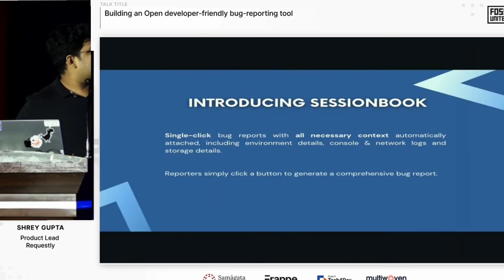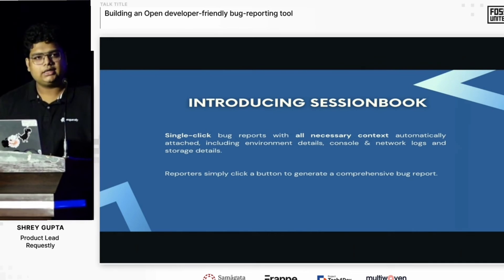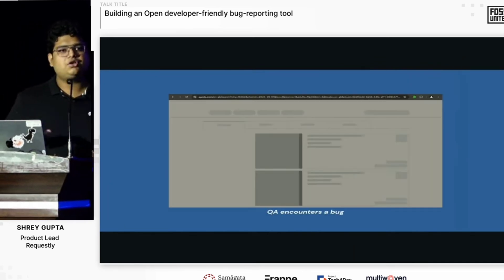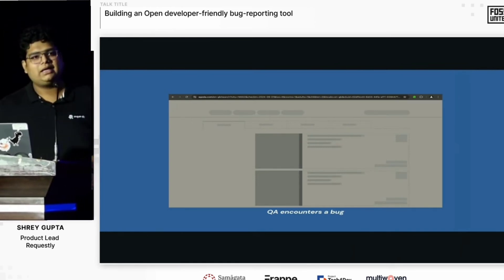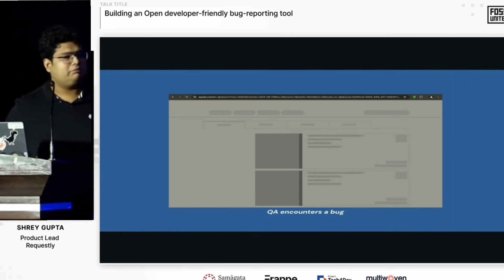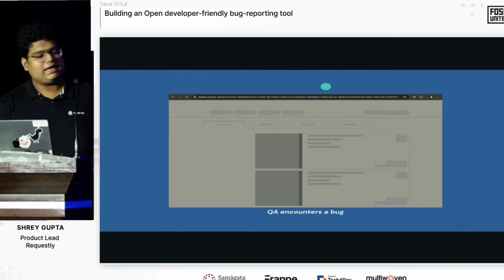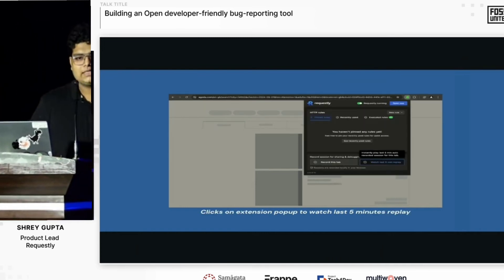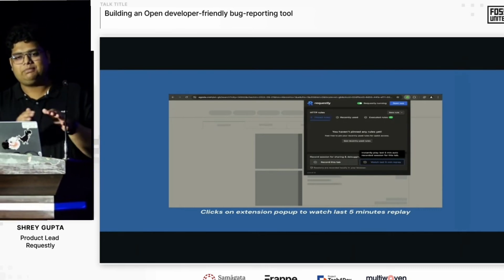Session Book is a single-click bug report that has all the necessary context attached automatically. Reporters simply need to click a button and an entire report is generated. For example, I'm a QA working on a site and I see that the page is not loading as expected. I'll click on the Requestly icon at the top left and click on 'Watch last five minutes.' Simply clicking that, I'll get a report of the entire previous five minutes.